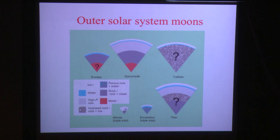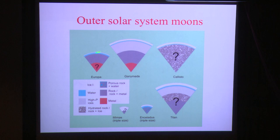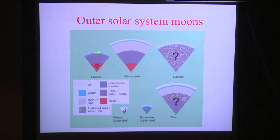Similarly for outer solar system moons, this is a selection of internal structures. They're more complicated because they tend to have an icy layer on top of silicate and metal interiors. The ice typically consists of low-pressure, low-density ice I, often an ocean, then higher-pressure ice phases, and then the silicates. Ganymede is the only one we know has a separate core because it generates its own magnetic field. Oceans in most cases have been detected by magnetic induction techniques.